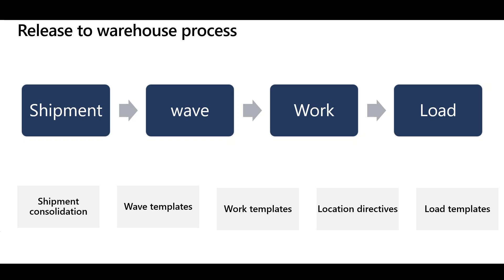Now let's talk about the release to warehouse process. The shipment, wave, work, and load documents are either created or processed with the release to warehouse step. The release to warehouse is the process where orders are sent to the warehouse for processing. It can be triggered in different ways: for a specific sales order from the sales order form, for a specific load from the load form, or using the periodic job for automatic release of sales orders to the warehouse. When released, a new shipment will be created or consolidated into an existing open shipment, managed by the shipment consolidation policies.